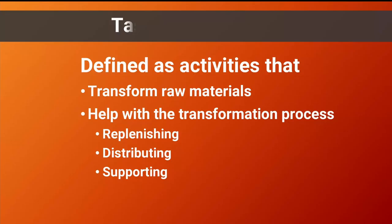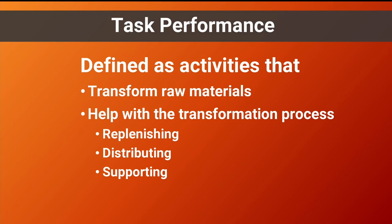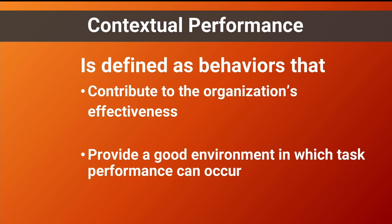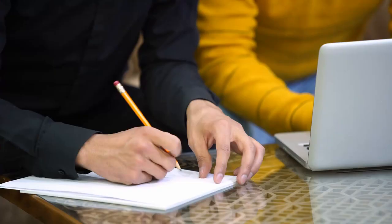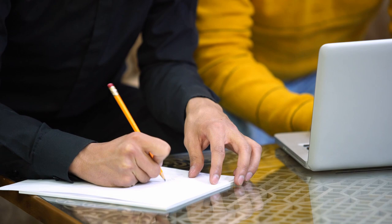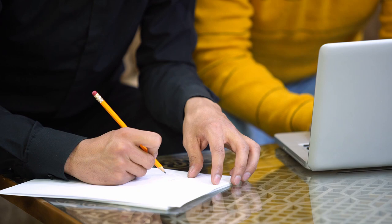Task performance is defined as the activities that transform raw materials and help with the transformation process, including sub-elements like replenishing, distributing, and supporting. Contextual performance is defined as behaviors that generally contribute to the effectiveness of the organization, providing a good overall environment in which tasks can be done correctly.